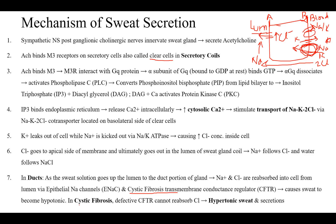However, in cystic fibrosis, you have a defective CFTR channel, and that channel cannot reabsorb chloride, due to which you have hypertonic sweat secretions — as seen in hypertonic sweat and other secretions in the body.